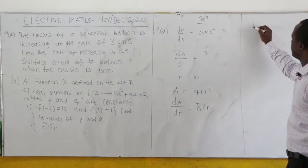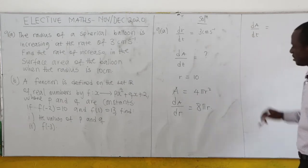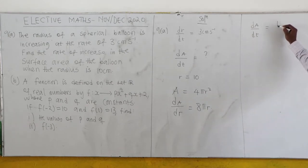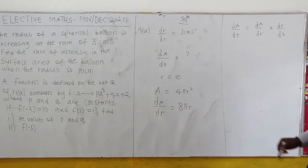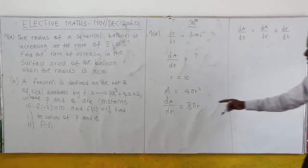Now we want to find dA/dt, so we use the chain rule: dA/dt equals dA/dr times dr/dt. Applying the chain rule...